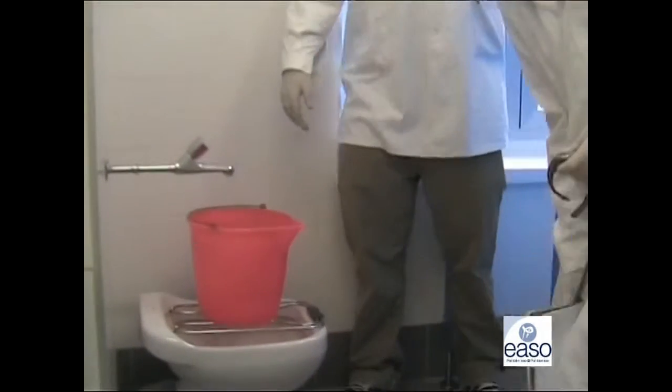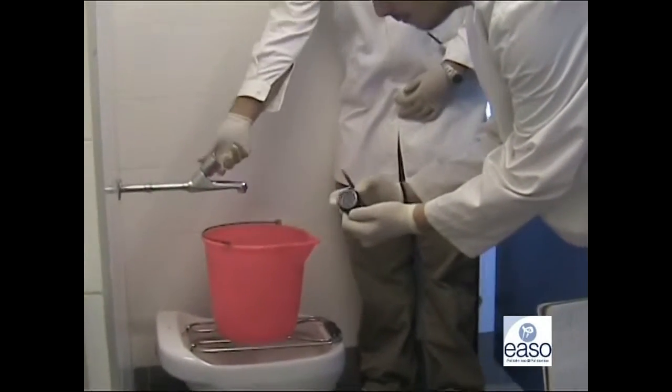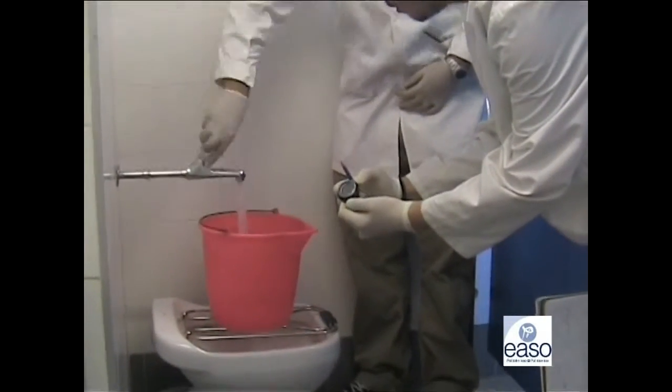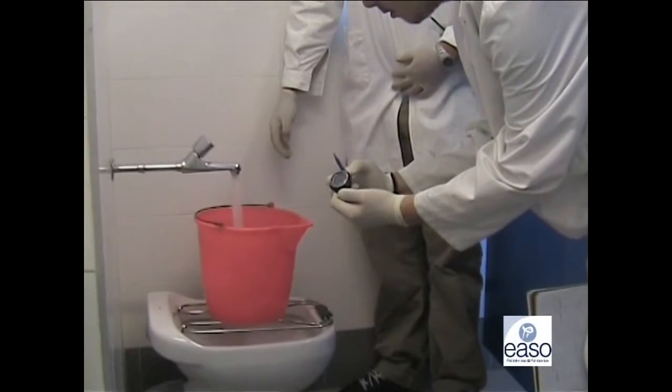A continuación vamos a ver como lo podéis hacer para grifos de ruleta. En este caso, abriremos el grifo a tope, y recogeremos el agua vertida durante un tiempo prefijado, que puede oscilar entre 5 y 10 segundos.